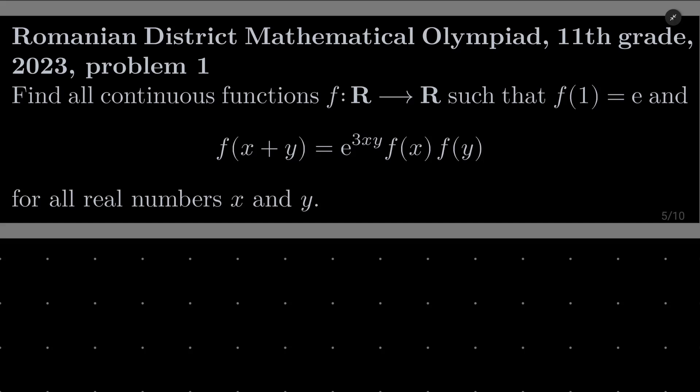We wish to find all continuous functions f from the set of real numbers into itself such that two conditions are met. First f of 1 equals e and furthermore f(x+y) equals e to the power 3xy times f(x) times f(y) for all real numbers x and y.